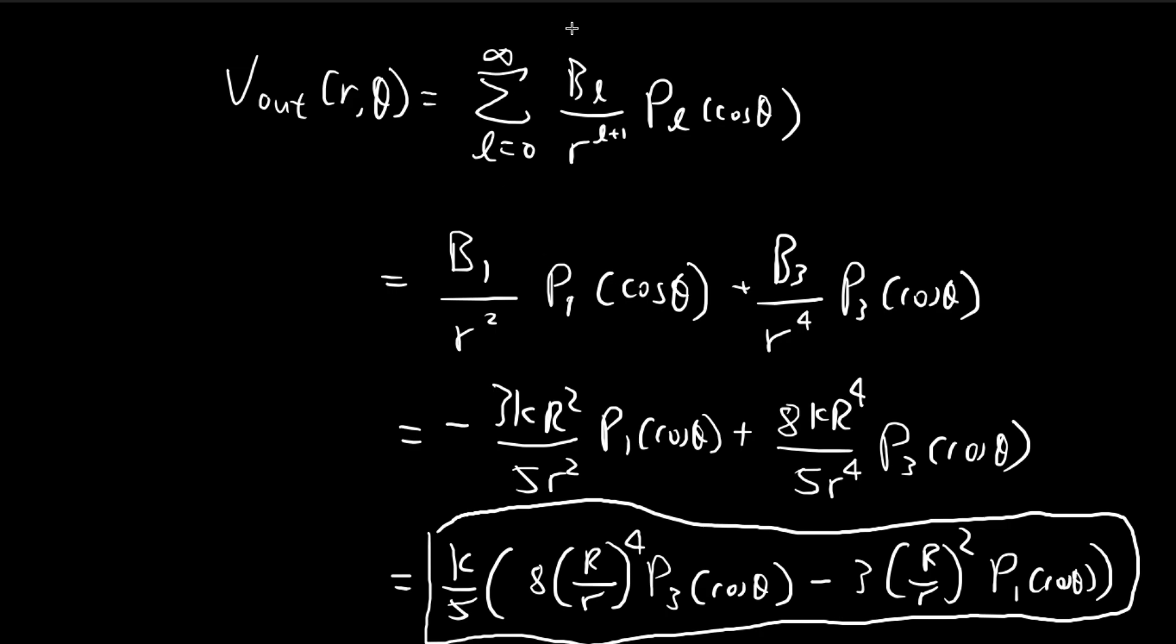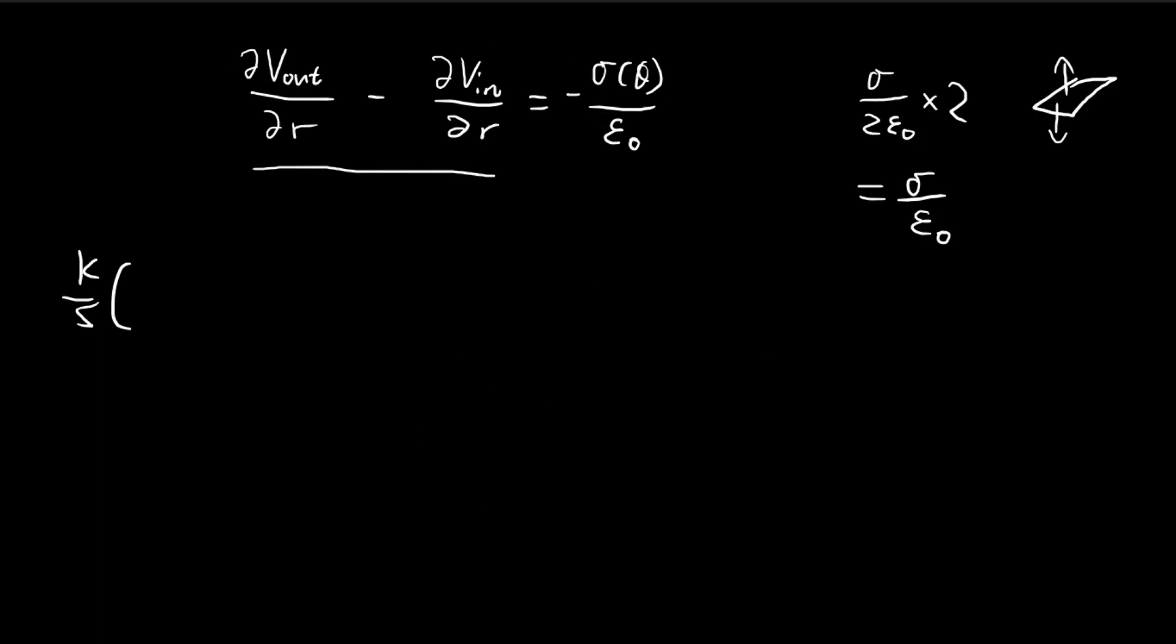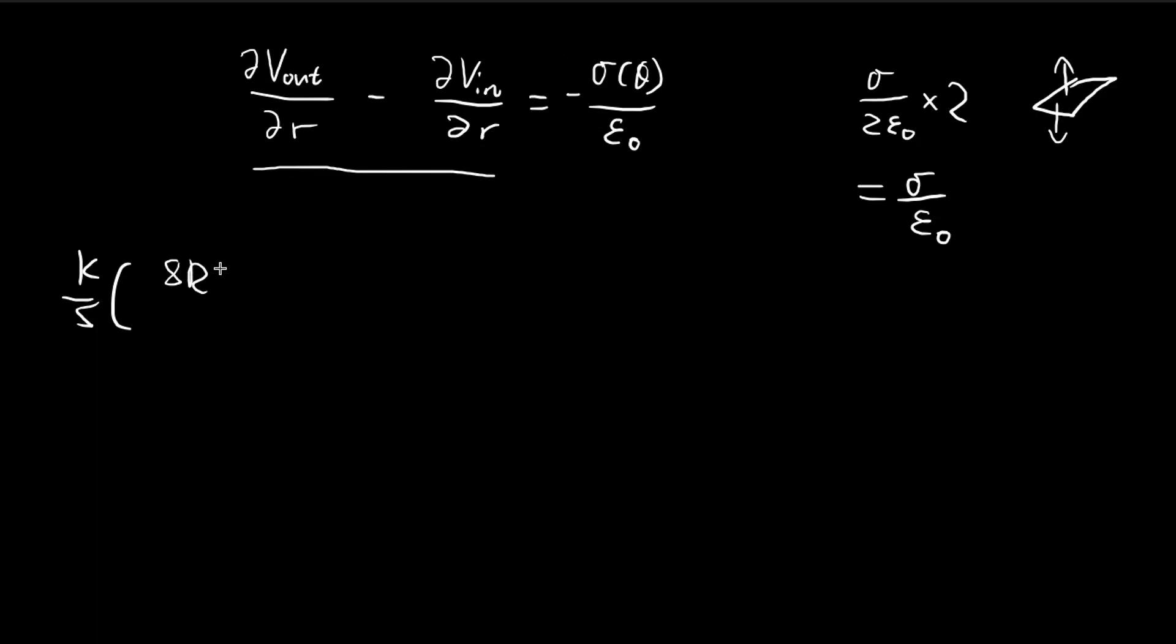So this is our outside potential. So we have to differentiate this with respect to R. So let's do just that. So we get 8R to the power of 4. Then there's an R to the power of 4. Then we're going to differentiate that. So we get something like this, cosine of theta.